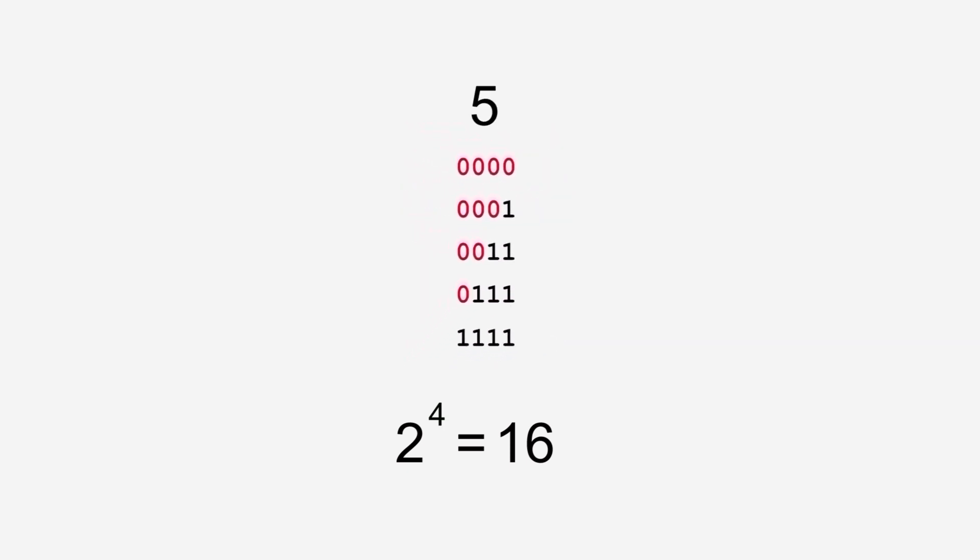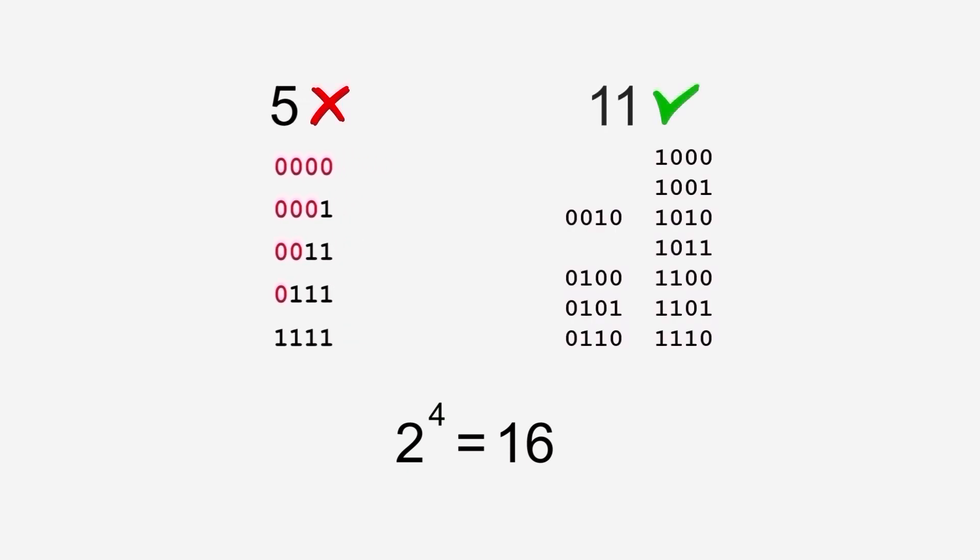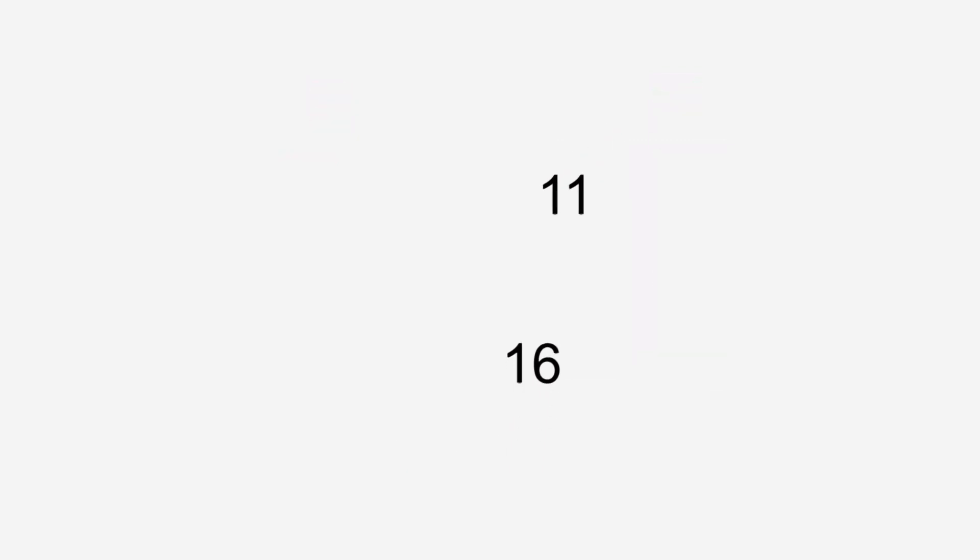How many of those 16 arrangements have all the zeros preceding the ones? Five in total. Those five arrangements will not form a pentagon. The remaining 11 will. So the probability of forming a pentagon with four random points on AB is 11 out of 16.